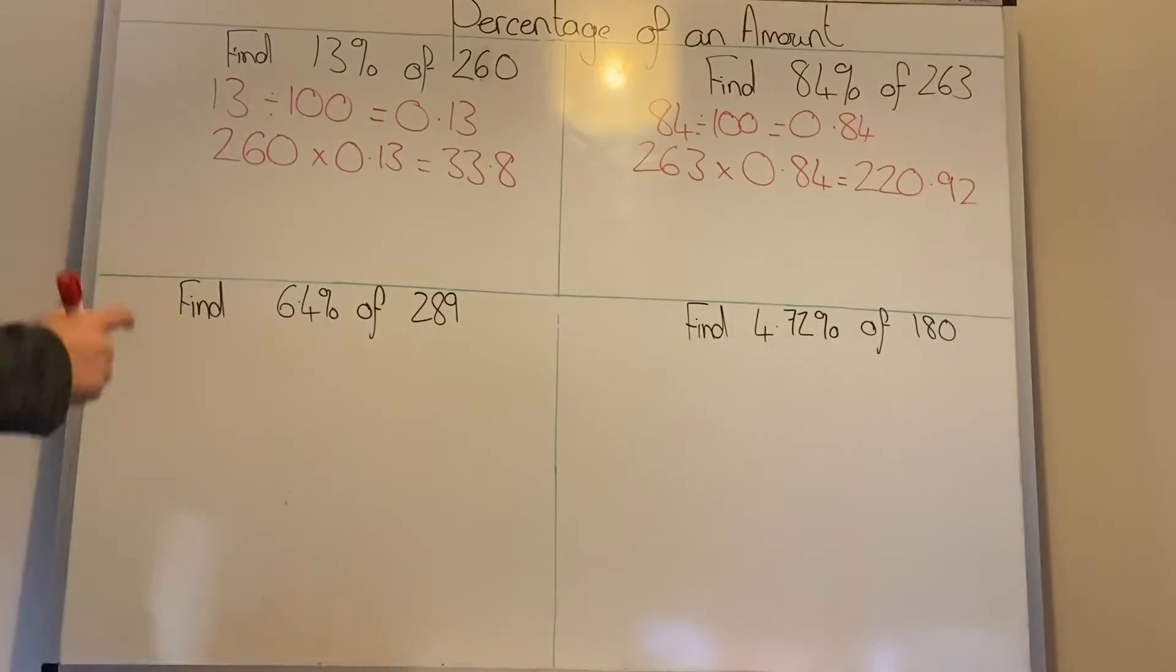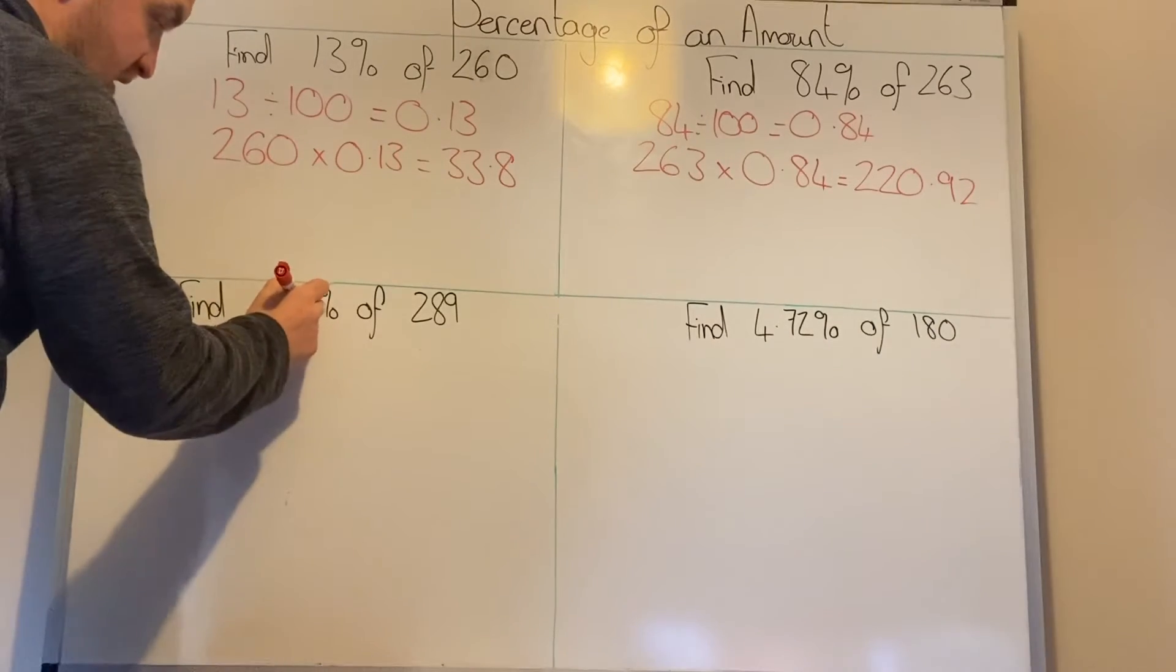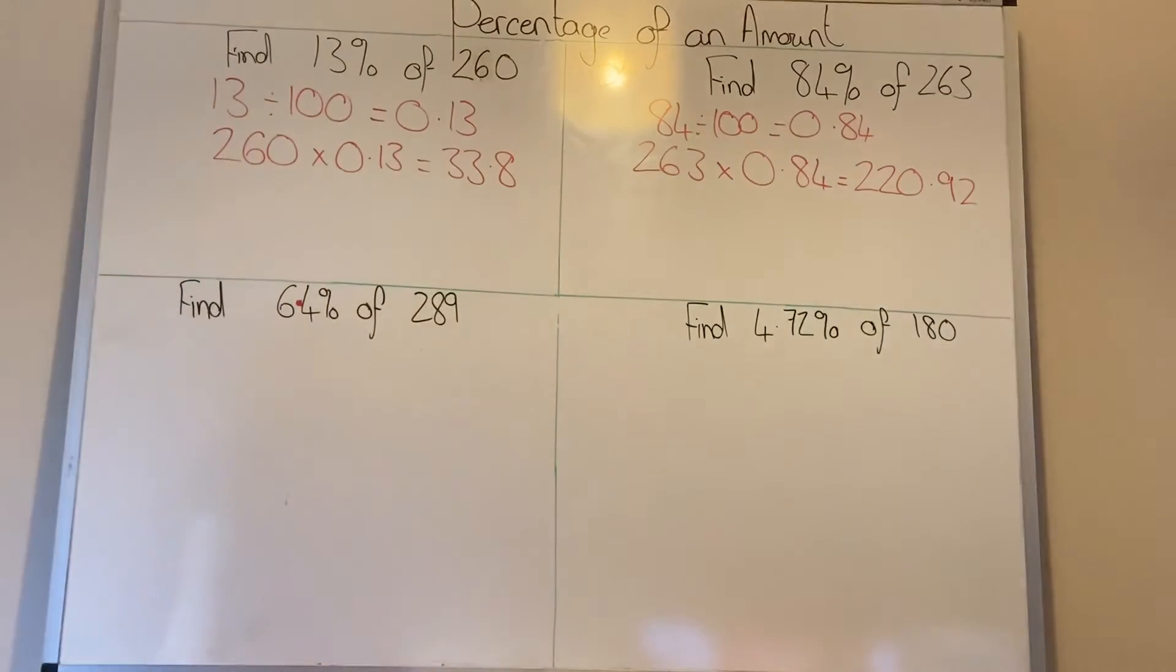Next one. Now this one's a little bit different. Why is this one different? Because it's got a decimal point in it. But the method is still exactly the same thing.